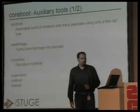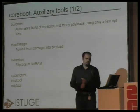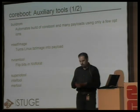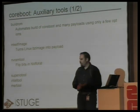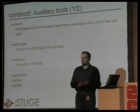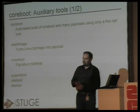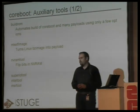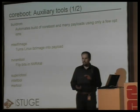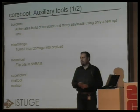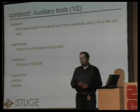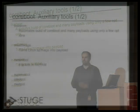I mentioned some auxiliary tools. We have BuildROM, which is important because we have Coreboot, several versions of Coreboot, and a whole bunch of payloads that need to be configured depending on which mainboard you have. BuildROM takes care of most of that for you — you just say 'I have this mainboard, this flash chip, I want this payload — go!' BuildROM gathers everything up and builds you the final working ROM file that you need to flash into your chip.